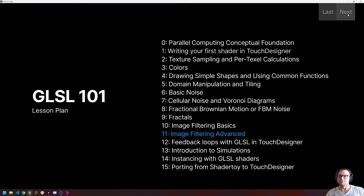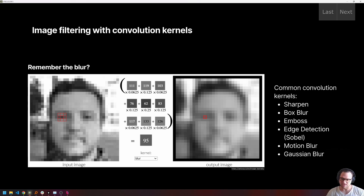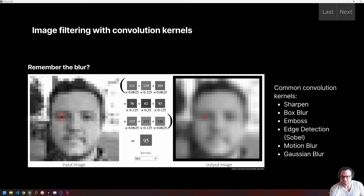So without further ado, let's get into it. Image filtering with convolution kernels. If you remember, at the end of our last lesson we talked about blurs — specifically the box blur — and how the box blur is an example of a convolution kernel-based image filter. That's the main topic for today. Let's take a deeper look using the blur as an example.